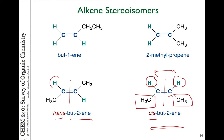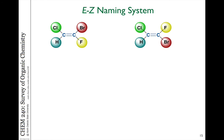Same thing for the trans — the two hydrogens are on opposite sides of the double bond and the two methyl groups, which are identical groups, are on opposite sides. The cis and trans naming system for identifying like groups as being either on the same side or opposite sides works well in many cases.